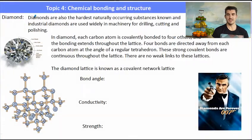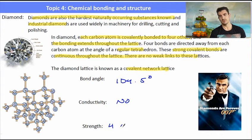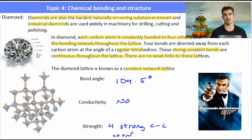Diamond is the hardest naturally occurring substance. We have a carbon bonded to four other carbons via a strong covalent bond, arranged in a regular tetrahedral structure, and we say the bonding is three-dimensional. The diamond lattice is known as a covalent network lattice. The bond angle is 109.5. It won't conduct electricity because all electrons are involved in a bond. Its strength comes from the fact that it has four strong covalent bonds.